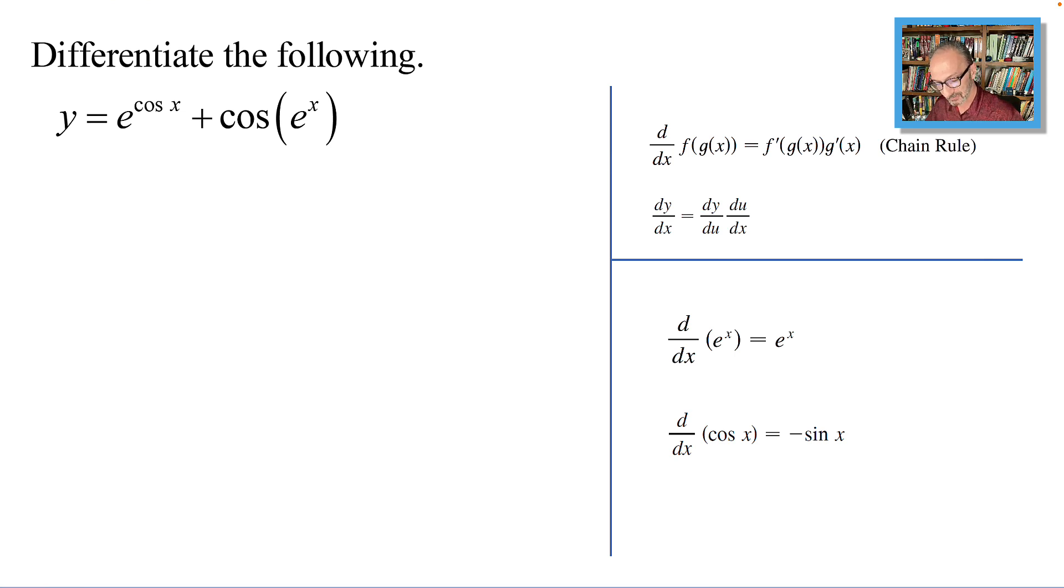However, if the function is e to the u, and we want to find the derivative, we will end up with e to the u times u prime, and that's because of the chain rule.